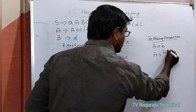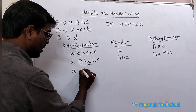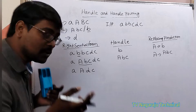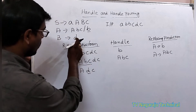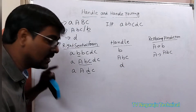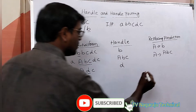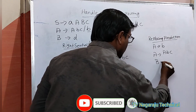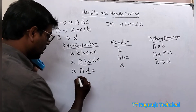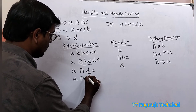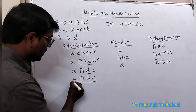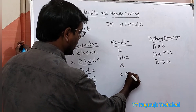The substring is replaced with A. The sentinel form is now A a d c. Check for another substring — yes, 'd' matches a production. My handle is 'd', so 'd' is replaced. The sentinel form becomes A a b c. Now this entire thing is a substring and is also a handle.